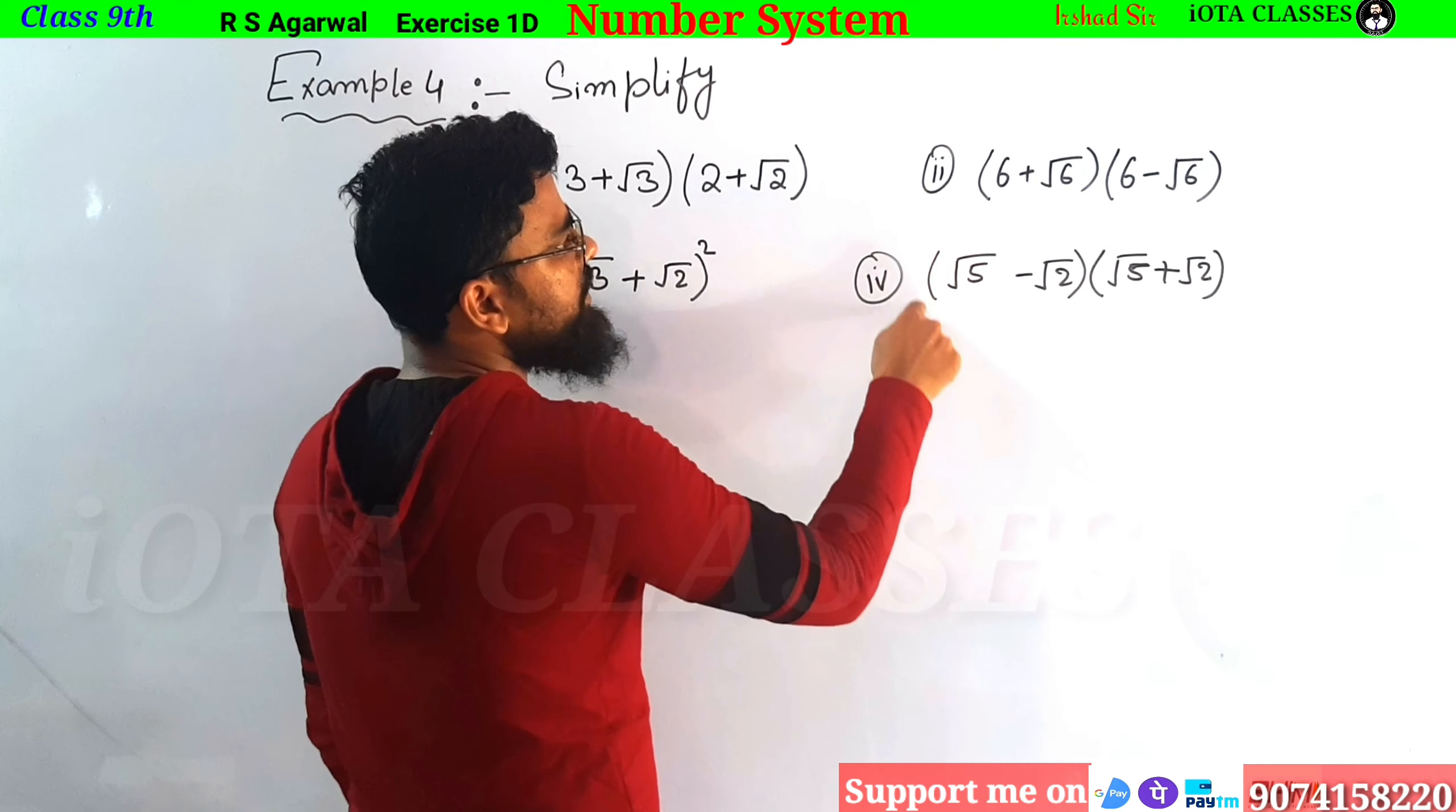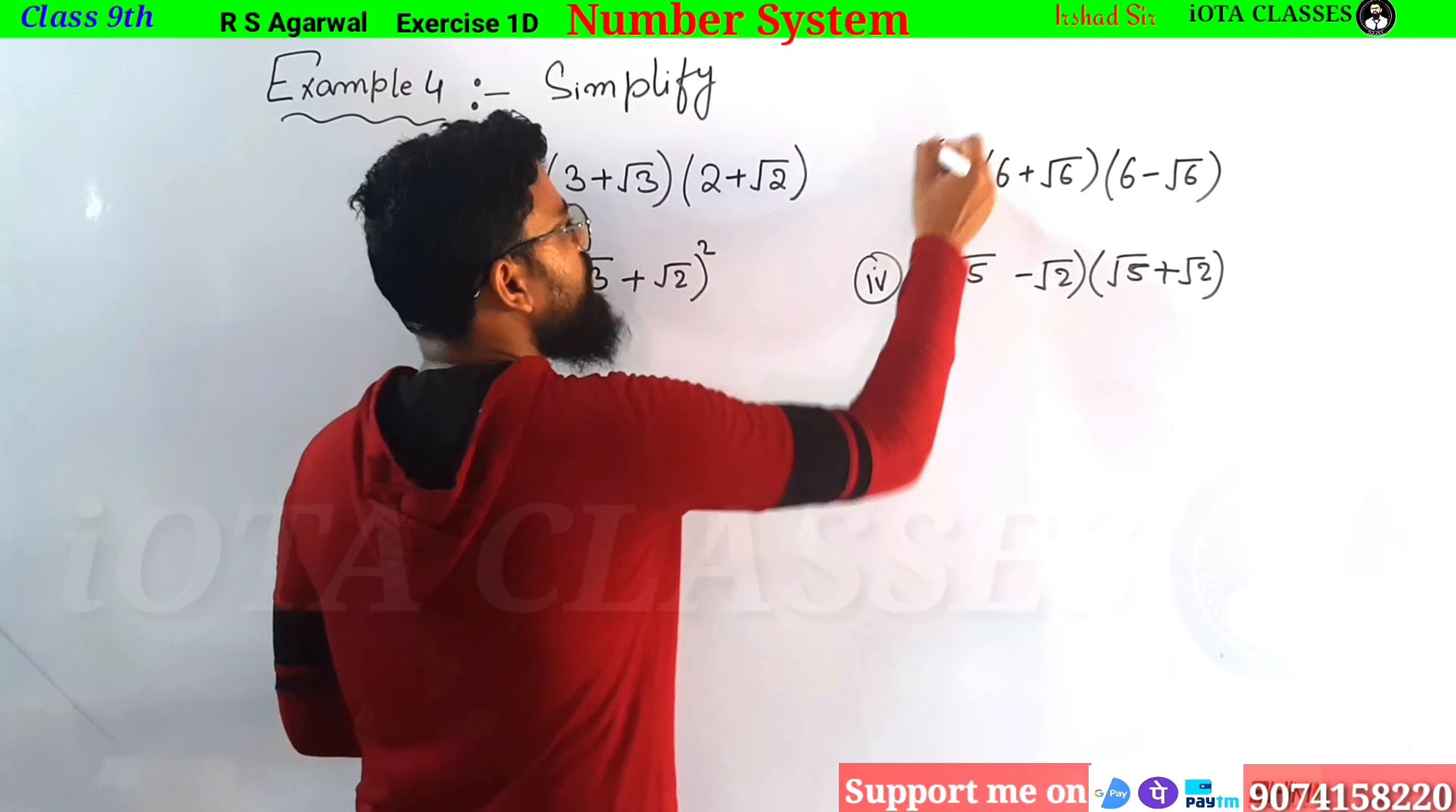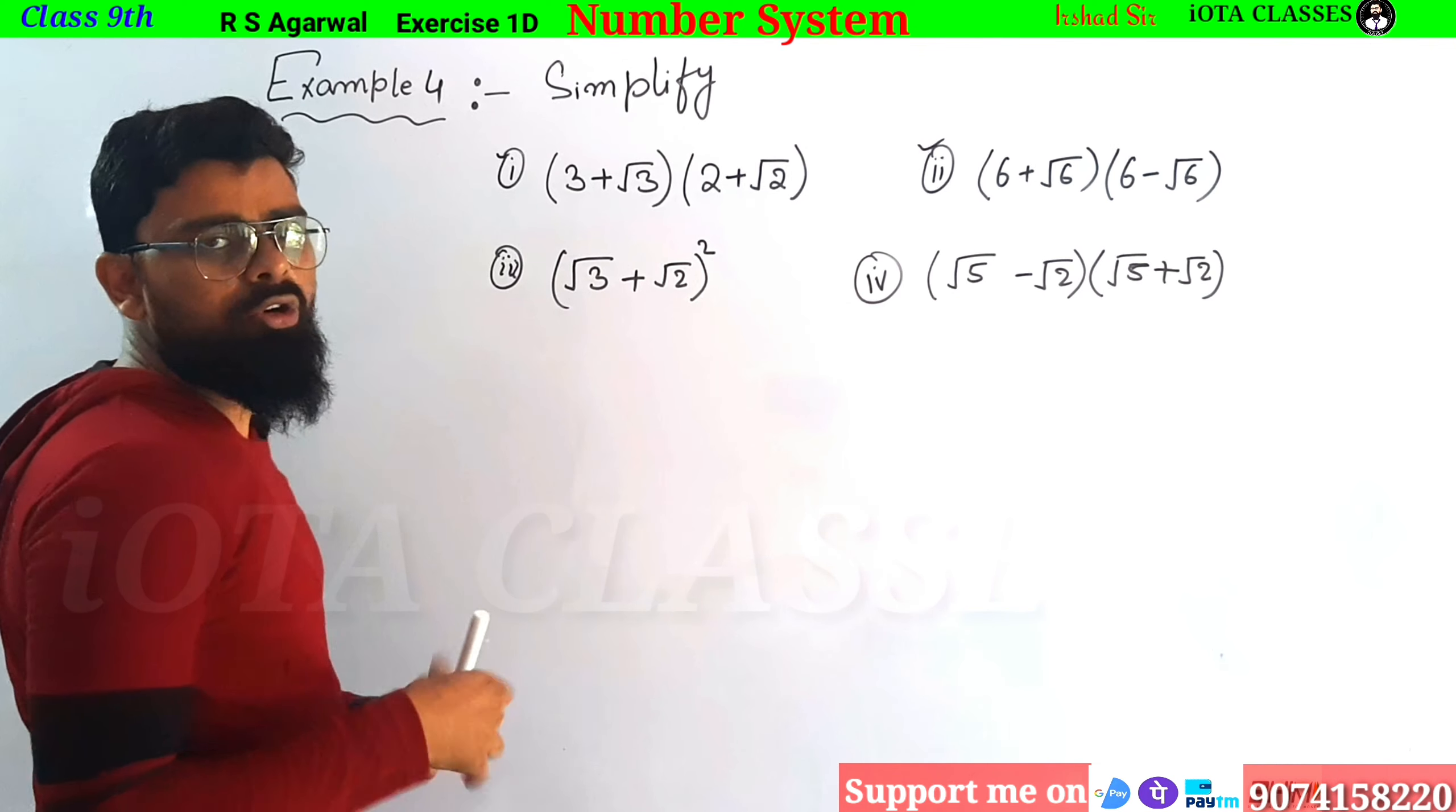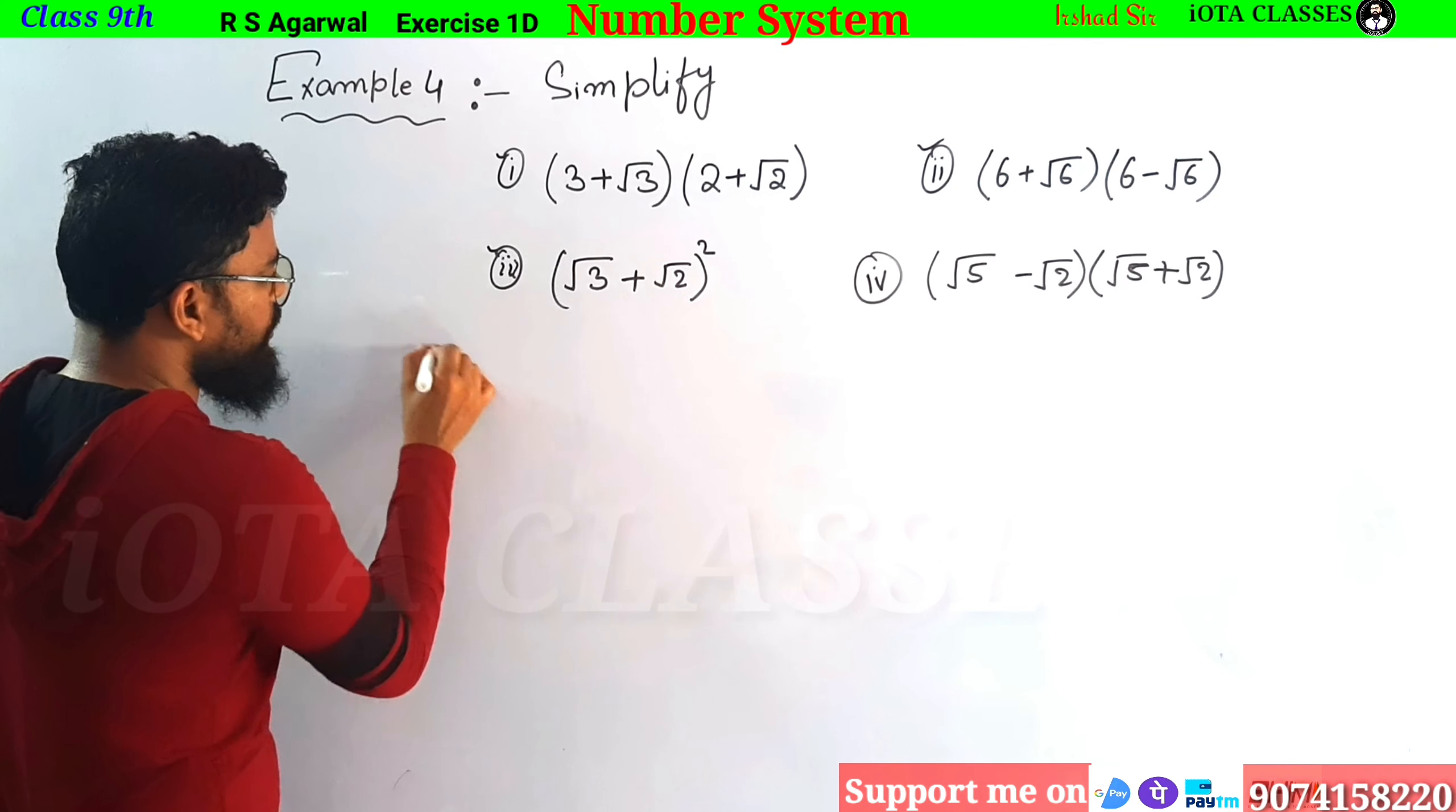And the fourth is root 5 plus root 2 and root 5 minus root 2. So these two questions are alike. I will solve two numbers. I will solve three numbers. So first of all, I will tell you about one number.